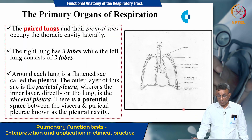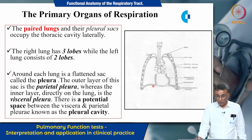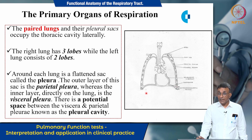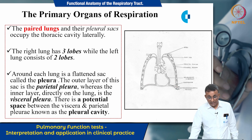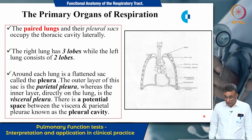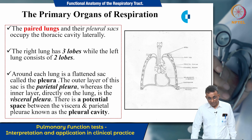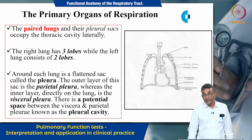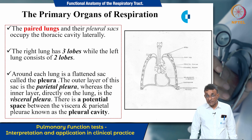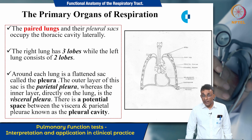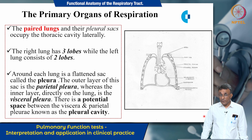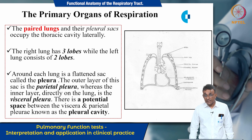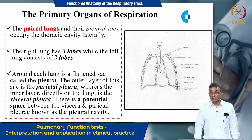The primary organs of respiration are the paired lungs which occupy the thoracic cavity laterally. The right lung has three lobes and the left lung has two lobes. Around each lung is a flattened sac called the pleura. The outer layer is the parietal pleura and the inner layer, which rests directly on the lungs, is the visceral pleura. There is a potential space between the parietal and visceral pleura known as the pleural cavity.